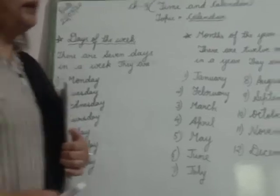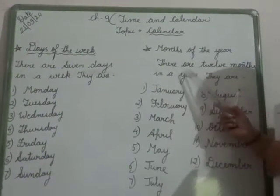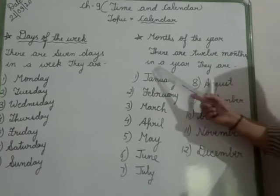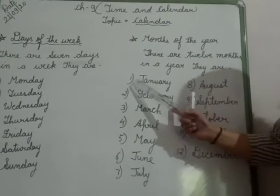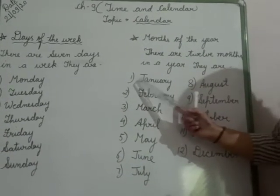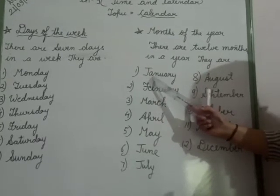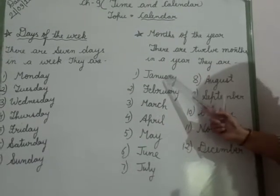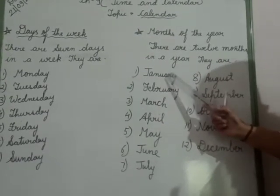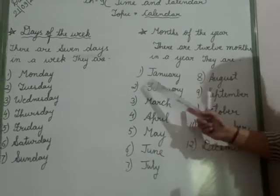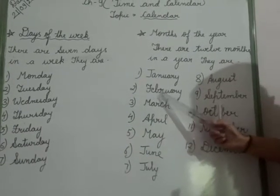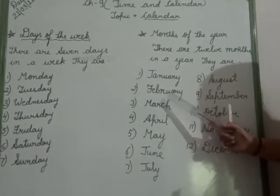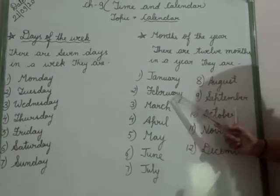Now we come to the months of the year. There are 12 months in a year. They are: First month, January, J-A-N-U-A-R-Y. January. Second month, February, F-E-B-R-U-A-R-Y. February.